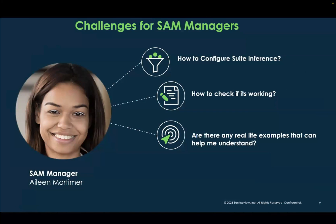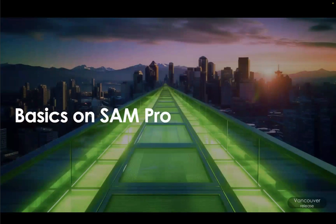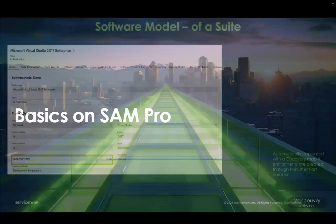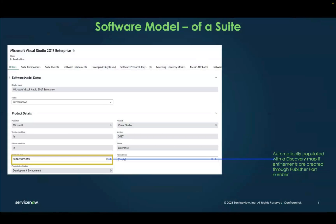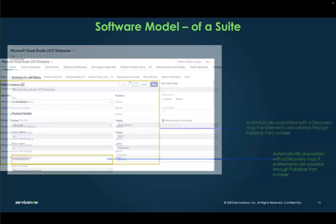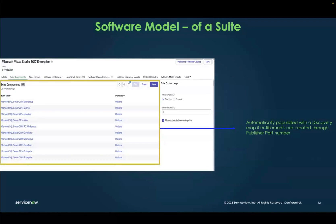What are the challenges that SAM managers face? How to configure suite inference? How to check whether it's working? And are there any real-life examples? The basics are: if you have a publisher part number, it will automatically create a software model, and that software model will have a discovery map, which will help you automatically populate the suite components.